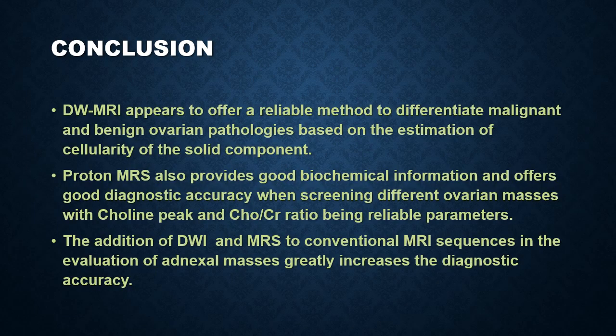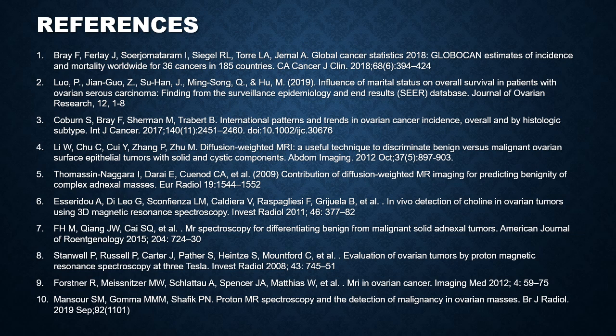In conclusion, diffusion-weighted MRI appears to offer a reliable method to differentiate malignant and benign ovarian pathologies based on estimation of cellularity in the solid component. Proton magnetic resonance spectroscopy also provides good biochemical information and offers good diagnostic accuracy when screening ovarian masses, with choline peak and choline-creatine ratio being the most reliable parameters. The addition of DWI and MRS to conventional MRI sequences in the evaluation of adnexal masses greatly increases diagnostic accuracy. Thank you.